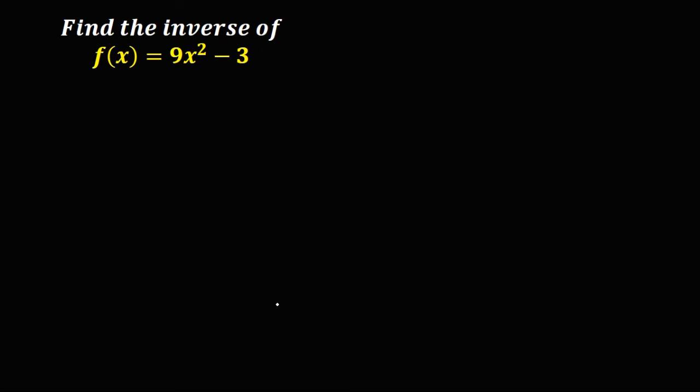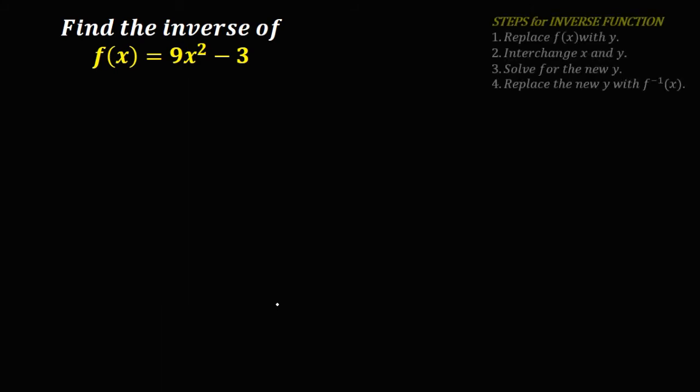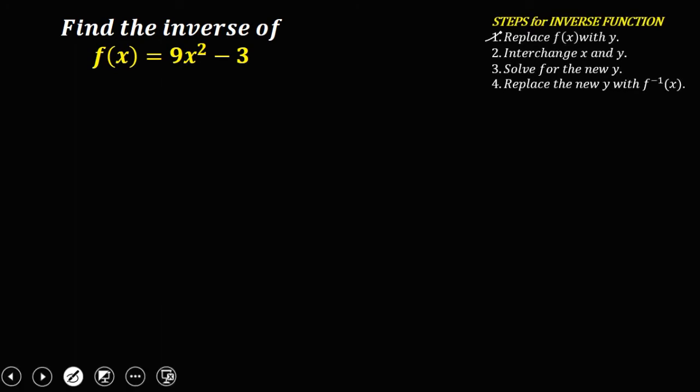Let's solve this problem. Find the inverse of this function: f of x equals 9x squared minus 3. To find the inverse of a function, we have these four steps. First, replace f of x with y. So this function now is y equals 9x squared minus 3.